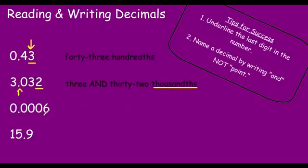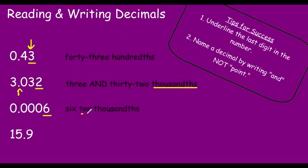For this next one, I have to sing the song in my head: tenths, hundredths, thousandths, ten-thousandths. Again, smaller than a one with the "th." So we have the ten-thousandths place and it is six ten-thousandths. Again, we are looking at that last digit and the place value of it.